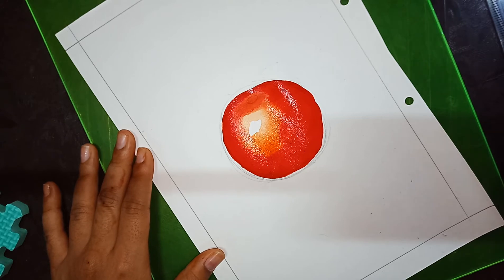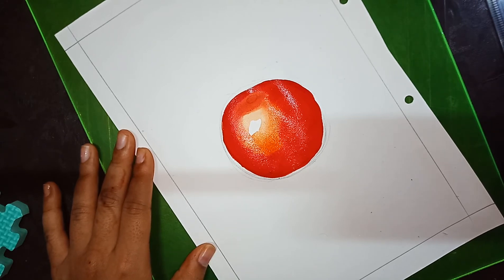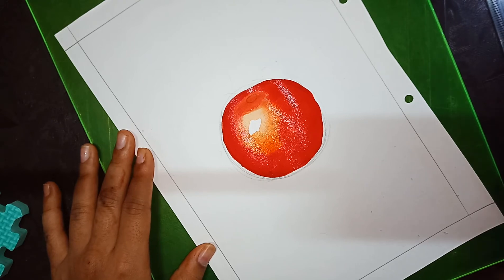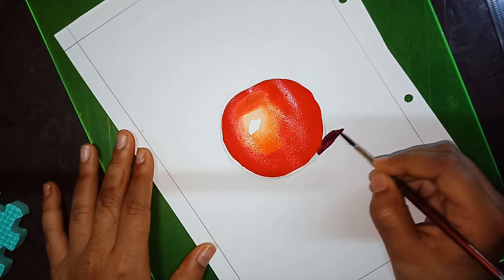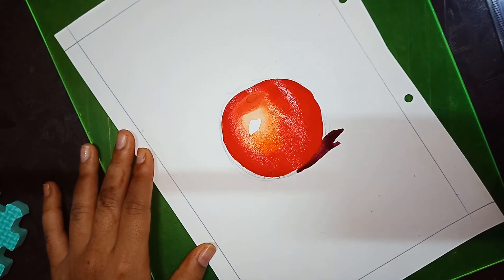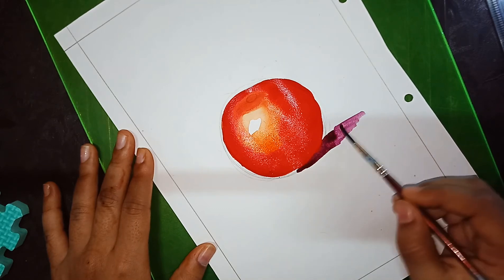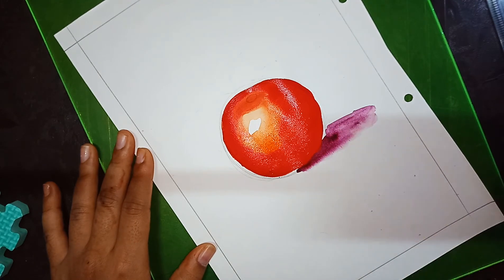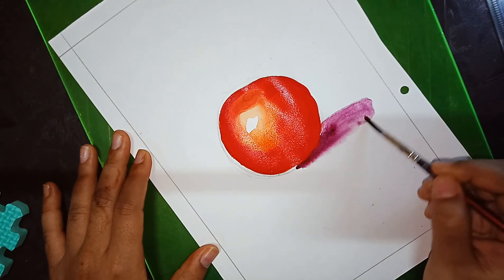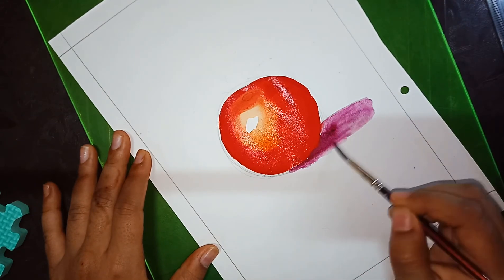Now we are going to add shadow of violet color. See how we add shadow—shadows are really darkened at its path, and then we are going to add water. Be careful that the color does not mix with the tomato.